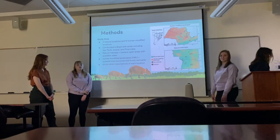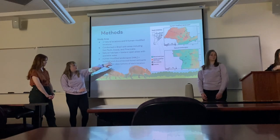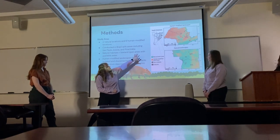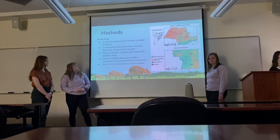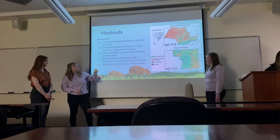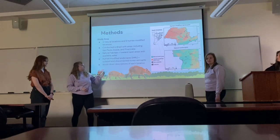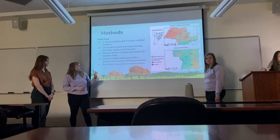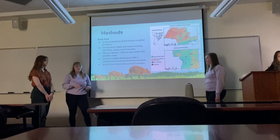When they started their study, they decided to do two natural landscape areas and then six different human-modified locations, which are posted on the map on the left. The natural land cover is in the greenish color, and the human-modified land cover is more in the red. As you can see, the top one has a lot more red and the bottom one has a lot more green. They conducted the study in Brazil, with areas including São Paulo, Araras, and Piracicaba. They identified the different landscapes by how open the area was — the natural habitats were more lowland open areas with more available water to the capybaras. The human-modified landscapes are more isolated and disconnected forest remnants, so they're more fragmented with separated forests and food sources.